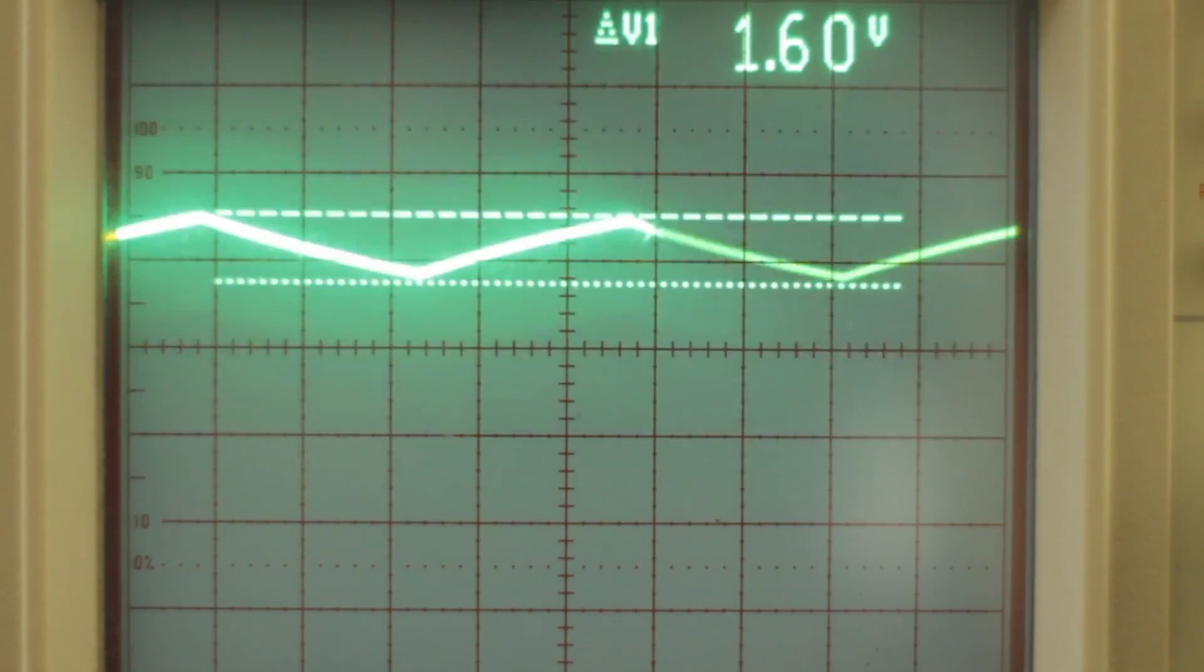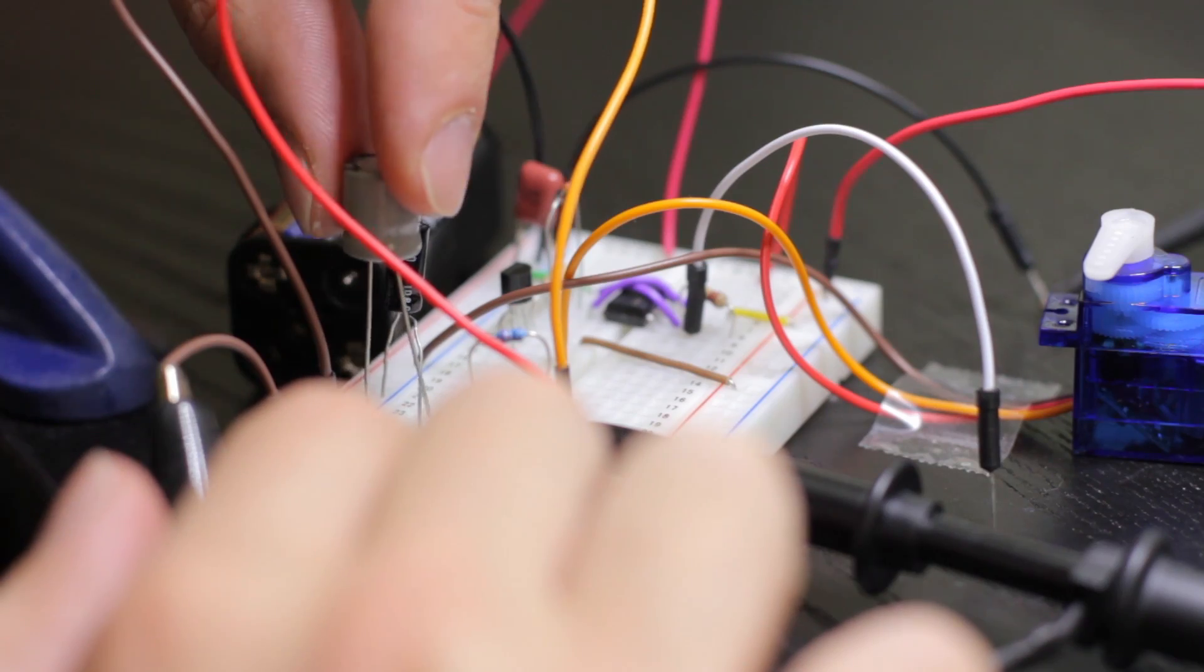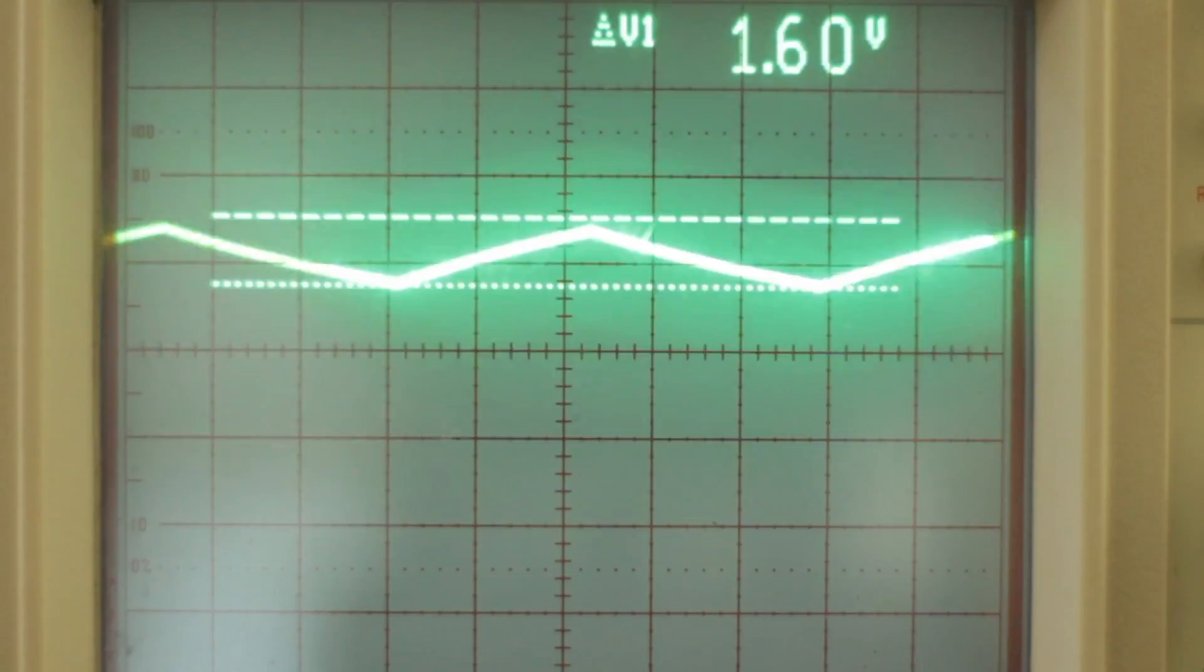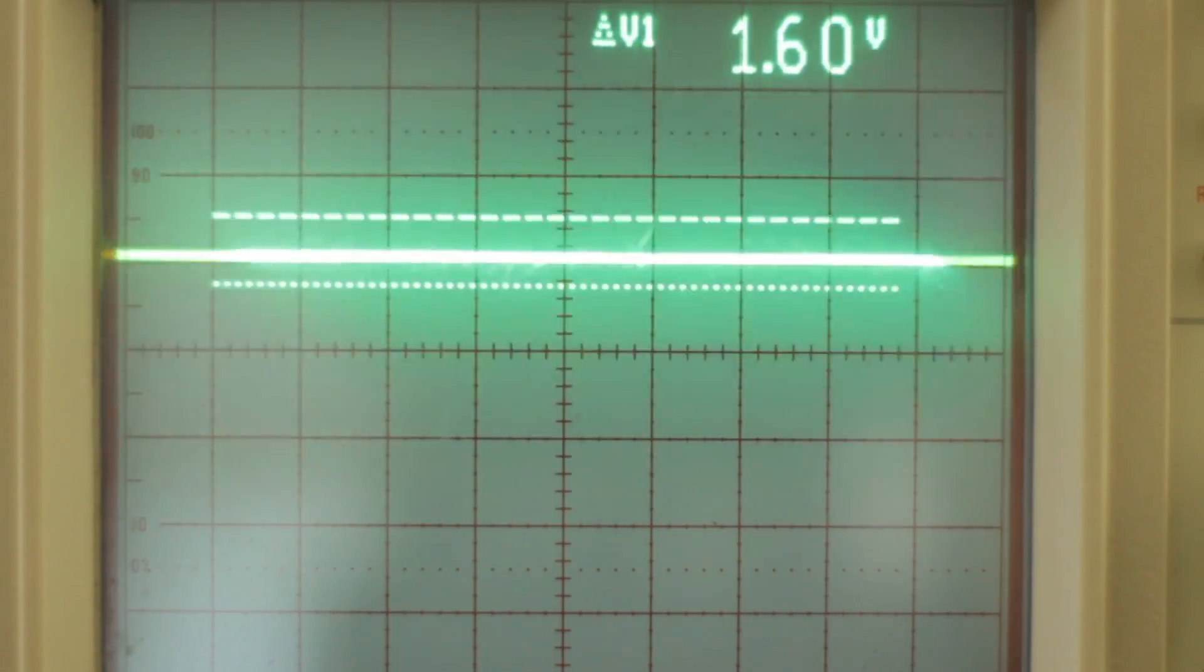It produces this triangular wave with 1.6 volts of change. Now I need it to be a flat line, so we increase the capacitance and we can accomplish this.